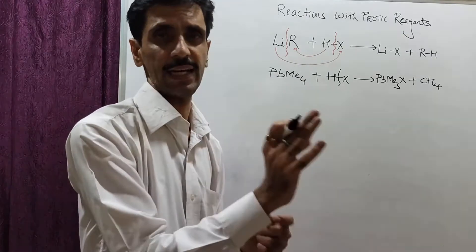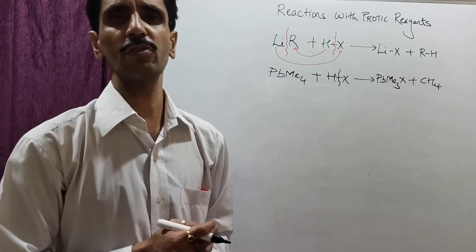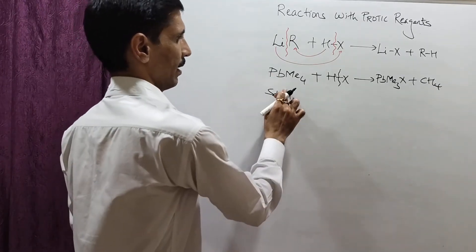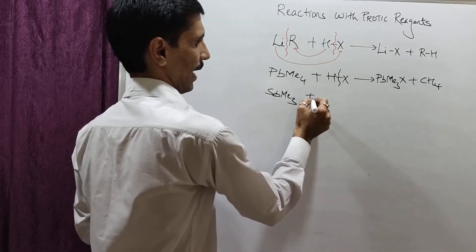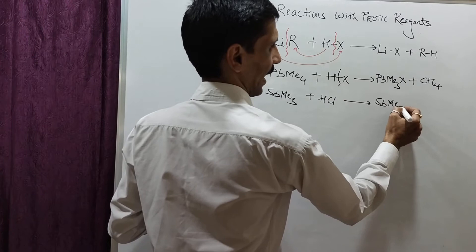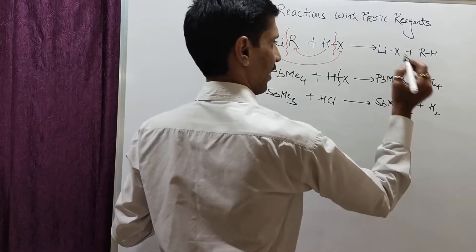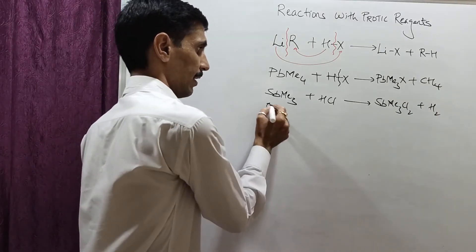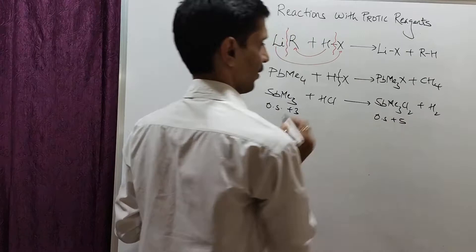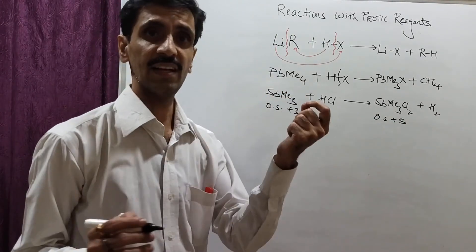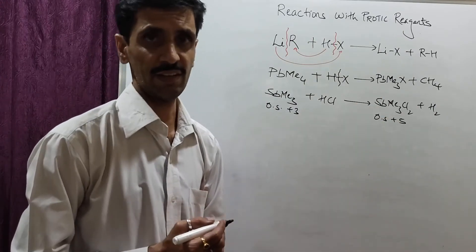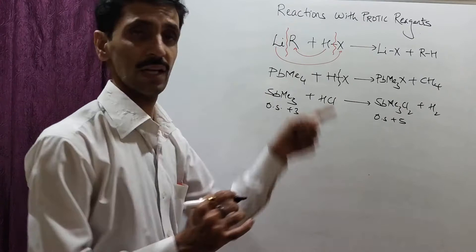Another example: SbMe₃Cl₂ treated with HCl. Here antimony's oxidation state increases from +3 to +5 — an oxidation reaction of antimony. This is different from the conventional proton-donation mechanism. The product is SbMe₃Cl₂ with H₂ released, showing that in some cases the reaction proceeds differently from a straightforward protic mechanism.